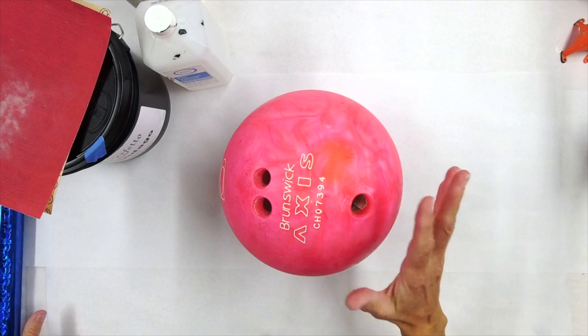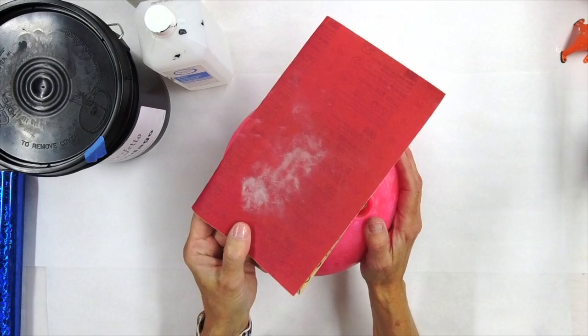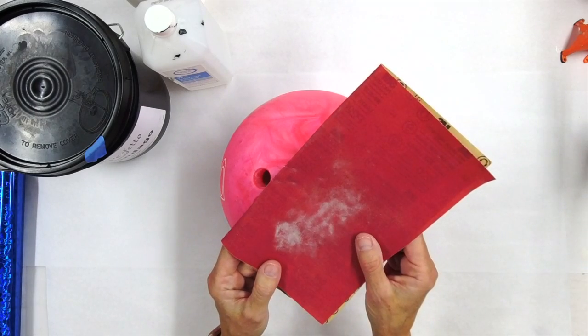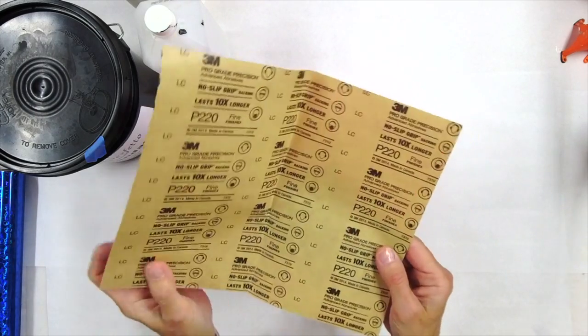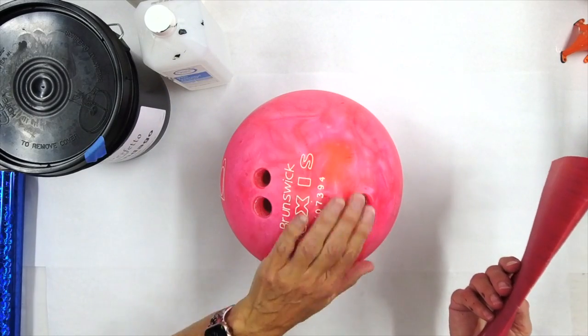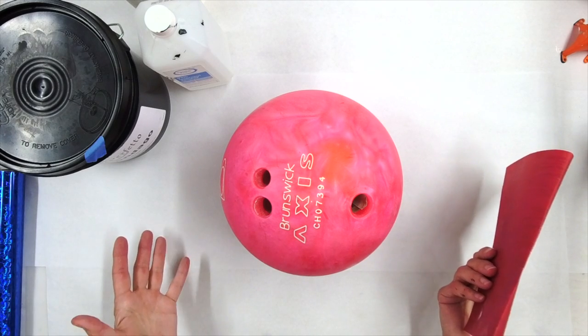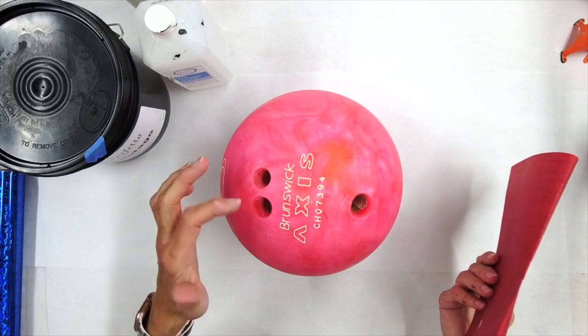So to begin with, I just grabbed this bowling ball. We did go outside because I don't like really sanding in my studio. I used 220 grit sandpaper and gave it a really good sand. I was trying to bring the sheen down so it looks matte now.